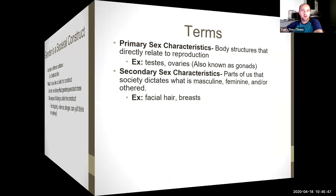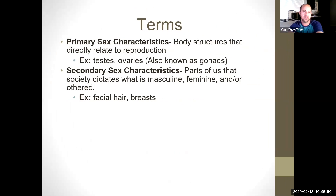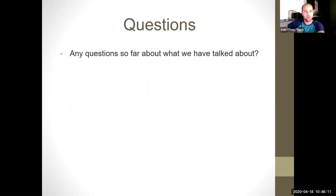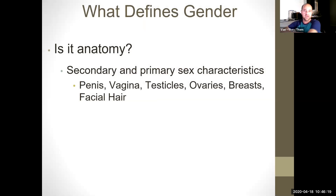Some more terms: primary sex characteristics are the body structures that directly relate to reproduction, like the testes and ovaries, also known as gonads. Secondary sex characteristics are the parts of us that society has dictated as masculine, feminine, and/or other — that goes back to those societal constructs. It could be facial hair, it could be breasts. So what defines gender? Is it our anatomy, our secondary and primary sex characteristics? Is our gender defined by having a penis or vagina, testicles, ovaries, breasts, or facial hair?